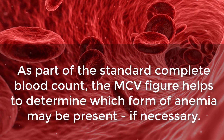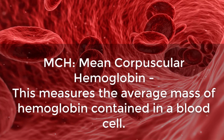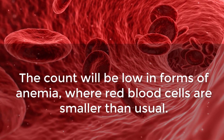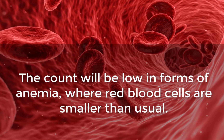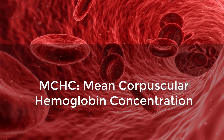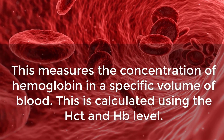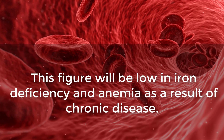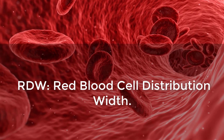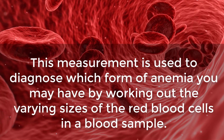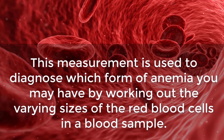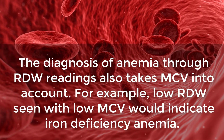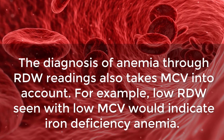MCV, or mean corpuscular volume, measures the volume of the average red blood cell as part of the standard complete blood count. The MCV figure helps determine which form of anemia may be present. MCH, or mean corpuscular hemoglobin, measures the average mass of hemoglobin; the count will be low in forms of anemia where red blood cells are smaller than usual. MCHC, or mean corpuscular hemoglobin concentration, measures the concentration of hemoglobin in a specific volume of blood, calculated using HCT and Hb levels — this figure will be low in iron deficiency and anemia from chronic disease. RDW, or red blood cell distribution width, is used to diagnose which form of anemia you may have by measuring the varying sizes of red blood cells. For example, low RDW with low MCV would indicate iron deficiency anemia.